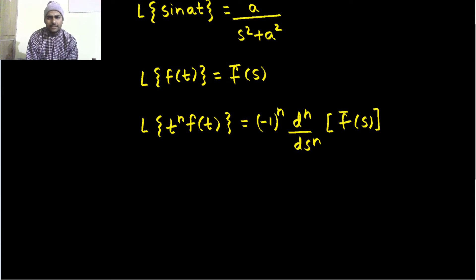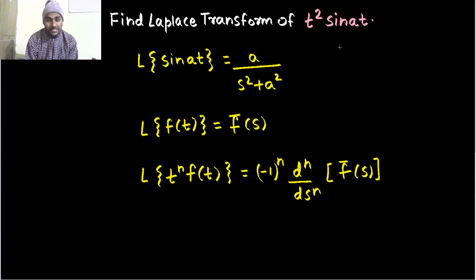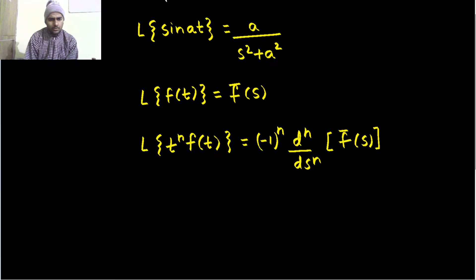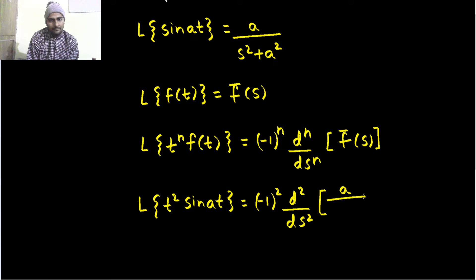Now, here in the current question, we have t square being multiplied, that means n value is 2. So, if I wish to find Laplace of t square sine at, so that will be minus 1 power 2. And the second derivative of what? Of a divided by s square plus a square.